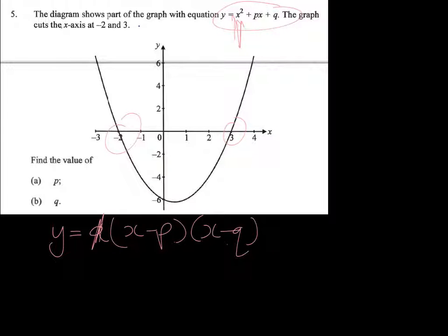So looking at the intercepts, if here x is equal to negative 2, the first bracket is going to be x plus 2. And the reason for that, remember,